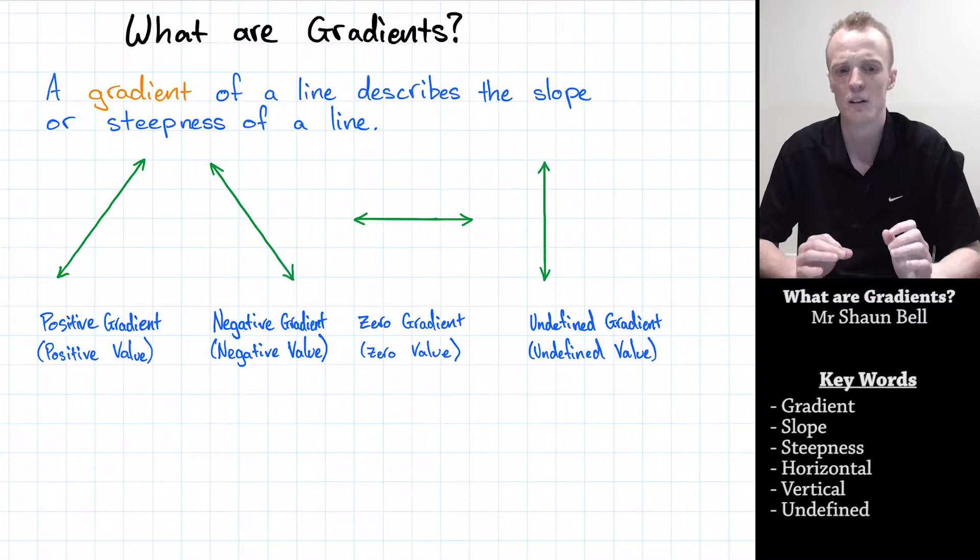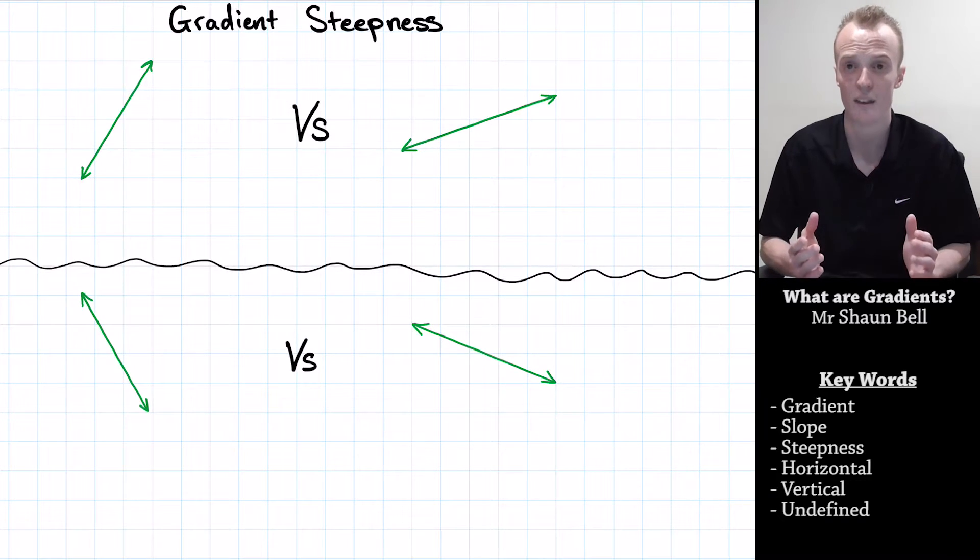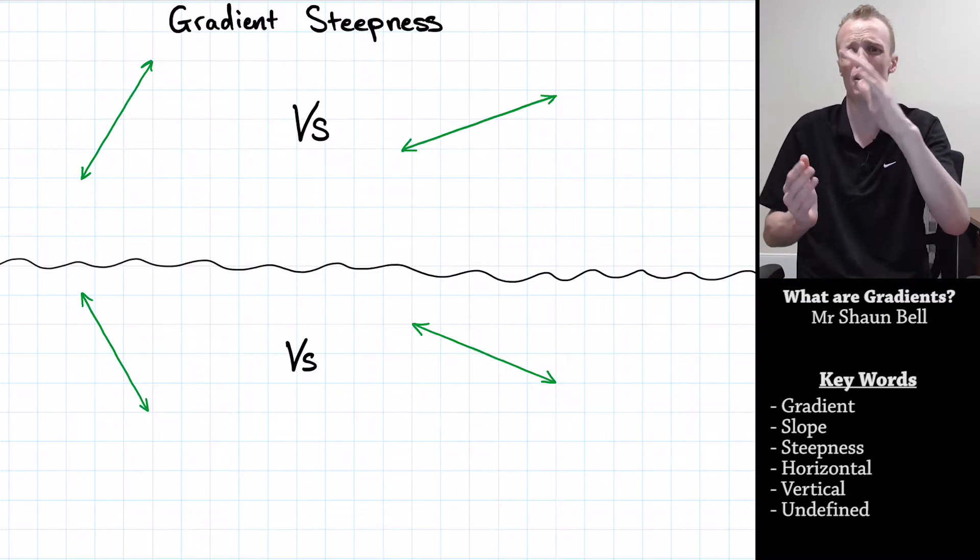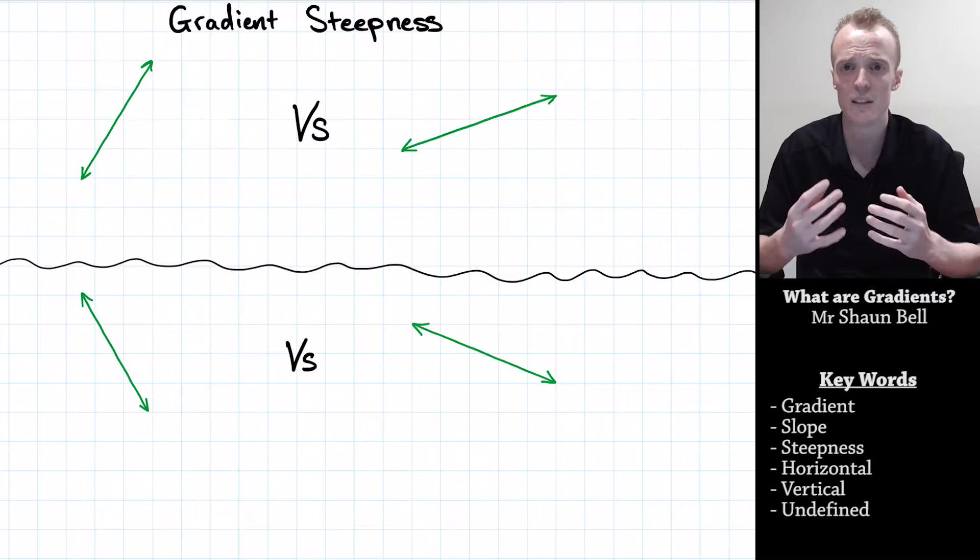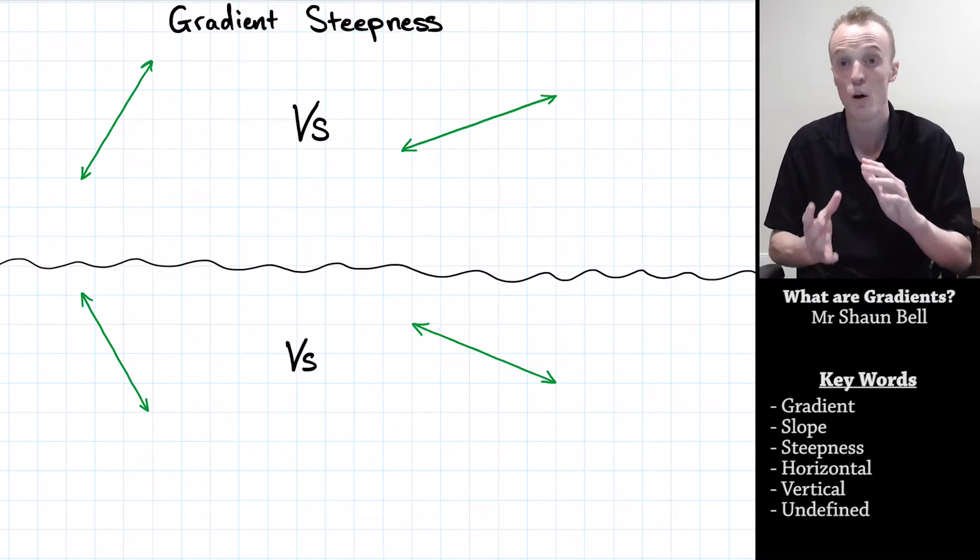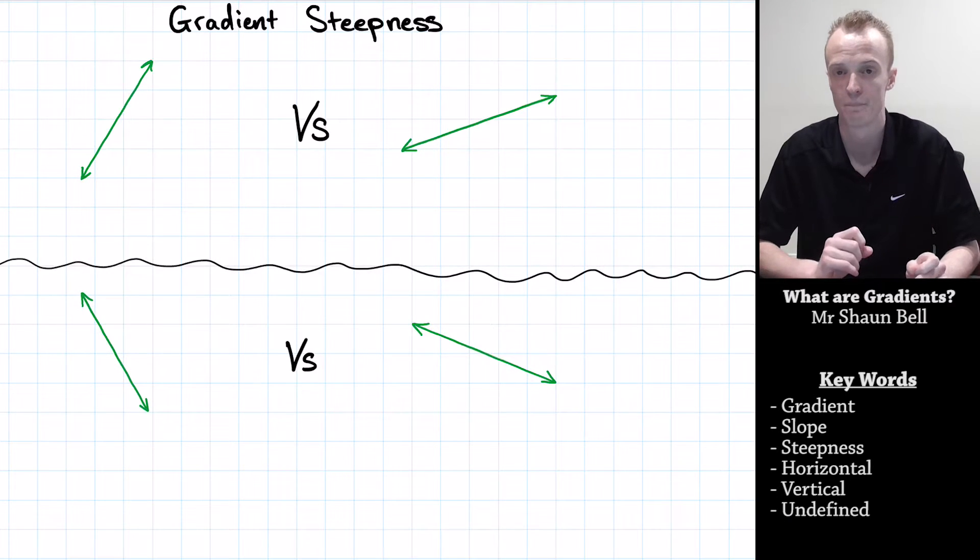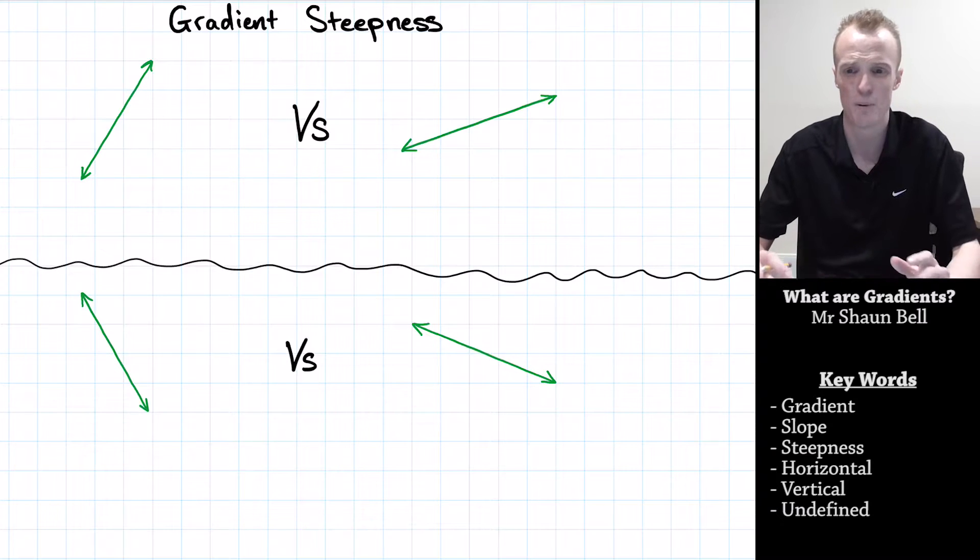Let's look a little bit more deeply at positive gradients and negative gradients. Obviously when talking about positive and negative gradients, they can have different levels of steepness. But how do we tell the difference between these levels? We tell the difference by how positive or how negative the number we use to describe that line is.